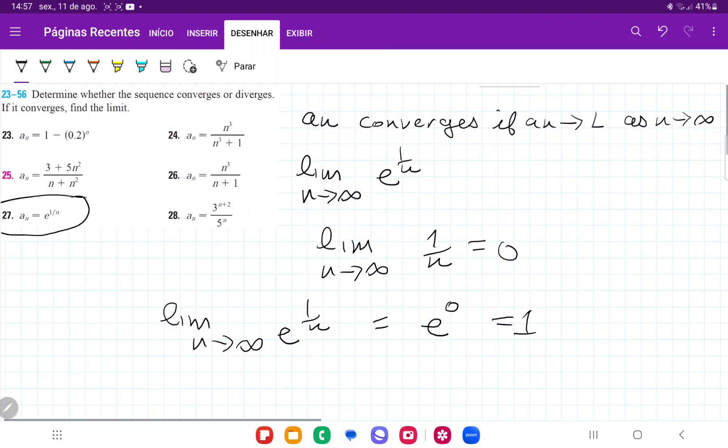And so we can see here that the limit, so a_n approaches 1 as n tends to infinity. And so therefore, a_n converges. And that is it for number 27.